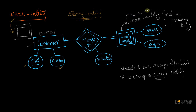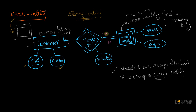These are called weak entities. Every weak entity must be related to a unique owner entity, which is a strong entity. Strong entities are all the regular entities we have seen till now. The relationship between the owner entity and the weak entity is one-to-many, because a customer could have multiple family members but each family member is associated with a unique owner.